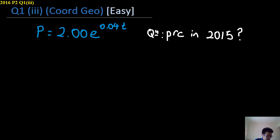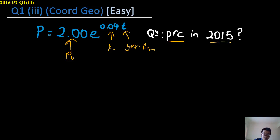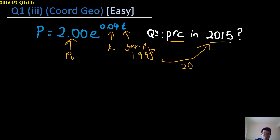With your new value of P0 and K here, the question just asks you what is the price when it's 2015. So you just need to tweak your T — T being year from 1995 to 2015 — T is equal to 20.